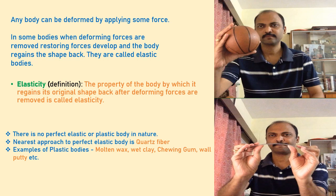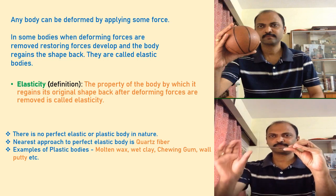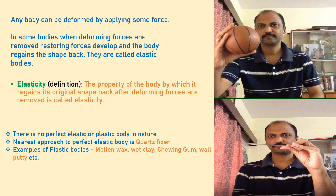In nature, there is no perfect elastic or plastic body. The nearest approach to a perfect elastic body is quartz fiber. Examples of plastic bodies include molten wax, wet clay, chewing gum, wall putty, etc. In the second video, you can see I am trying to deform a scale, and the scale regains its original shape back.